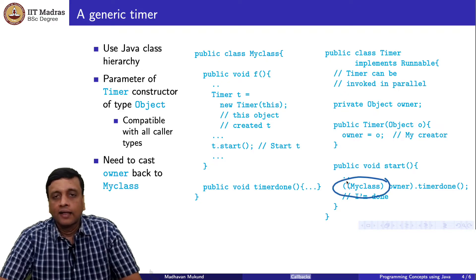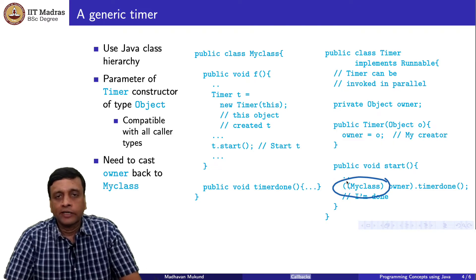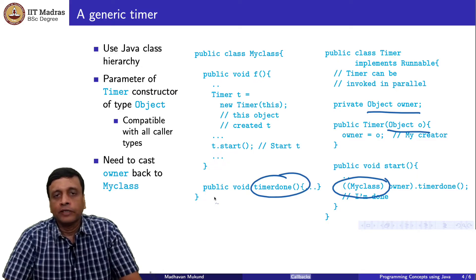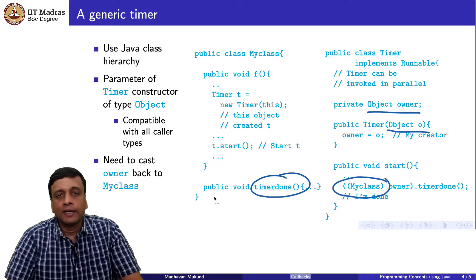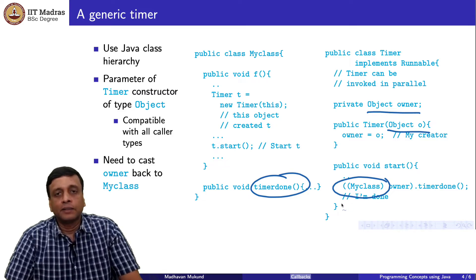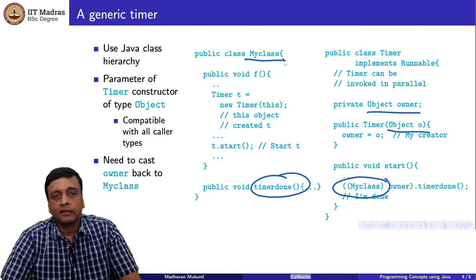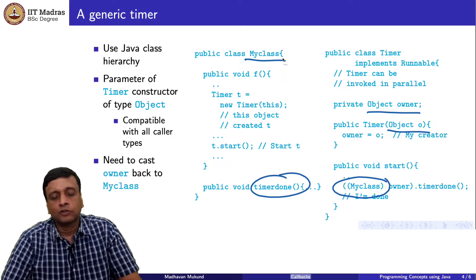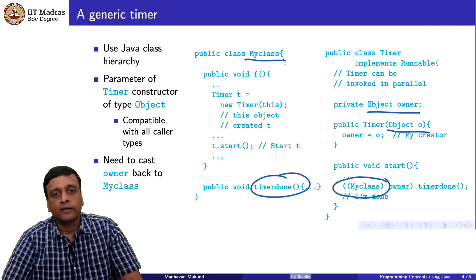We are stuck because we need to cast it back to the class that called it. Earlier we were trying to avoid having a dependence on the calling class by allowing the owner to be an arbitrary object, but when we call it back we need to know that this function is there. We need to know that the calling object has a capability and we need to invoke it, and to invoke it we have to cast it back. This is again a typical situation which is asking for an interface, because we want some capability of this class — we want my class to have the capability to be informed through timer done. An interface captures this kind of limited capability, so the natural solution is to do this whole thing using interfaces.